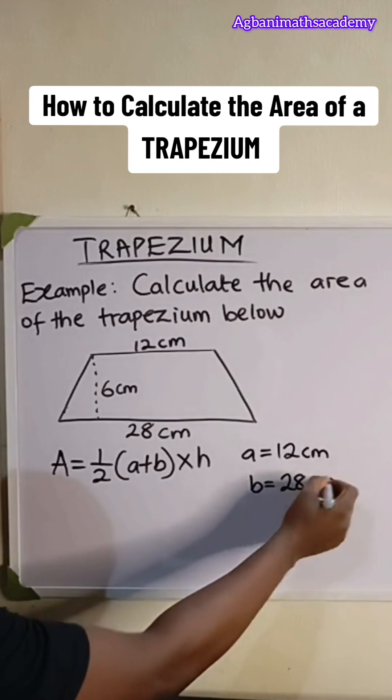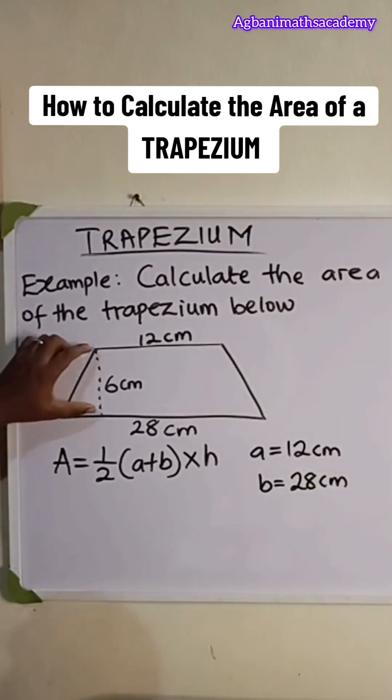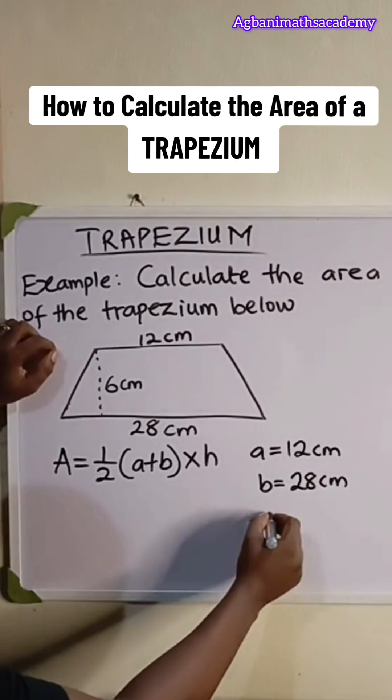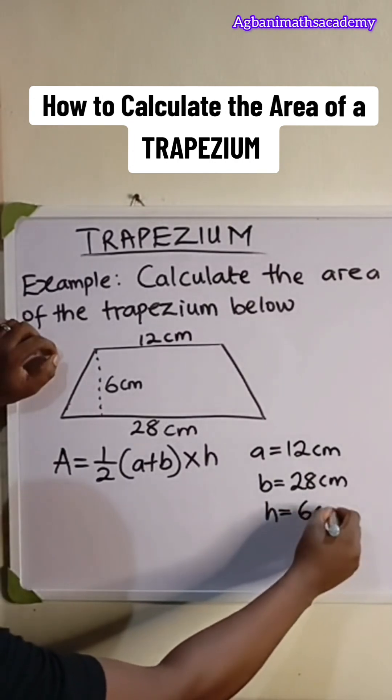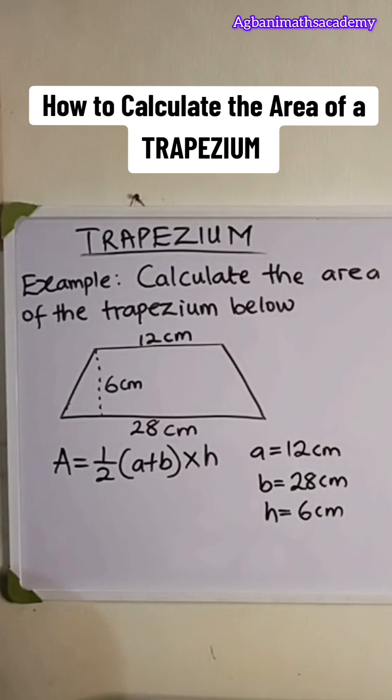28 centimeters, and our height is the distance between them. So h is equal to 6 centimeters. So we know all the values we need to solve this question.